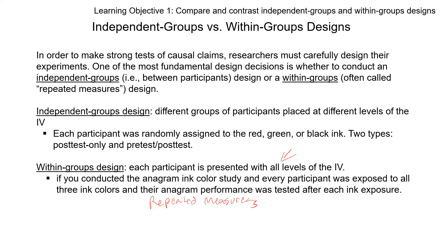Another type involves a logical pairing mechanism — you call this paired samples. For example, all of your participants are sets of twins. You give one twin drug A and one twin drug B, then measure the outcome. So your pairing mechanism there is the twins. But there's also a third type: matched samples.